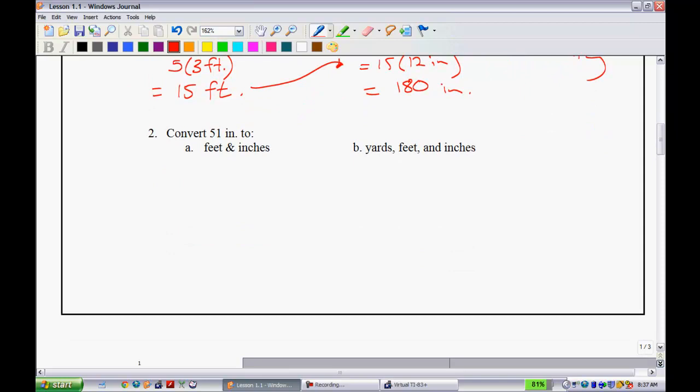Try one more. Convert 51 inches to feet and inches. You're going to put as many feet into those 51 inches, and then the remainder is going to be in inches. What you would do here is basically 51 divided by 12. That would end up giving you - 12 goes into 51 four times, that would be 48. So you have four feet and three twelfths left over, which is the same thing as having four feet, three inches.